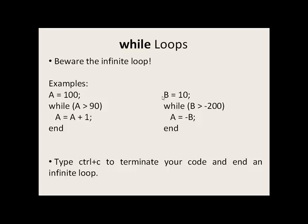Here's another example where b is equal to 10. While b is greater than negative 200: 10 is greater than negative 200, that's true. a is equal to negative b, so a equals negative 10. We go back up to the top — b is still 10, so this statement is still true. We never update the value of b. You always must be careful to update whatever variables you use within the test condition. If you do get stuck in an infinite loop, you can use Ctrl+C to terminate your code.